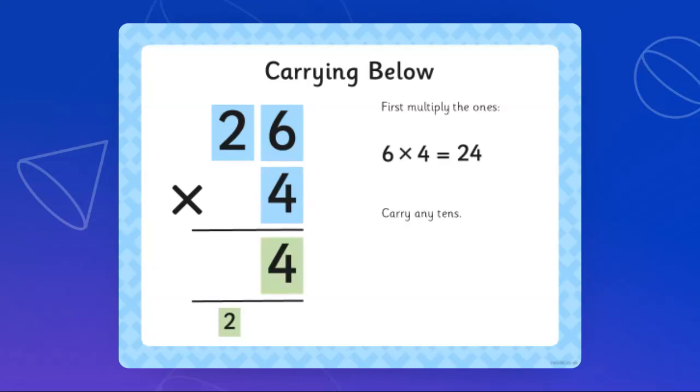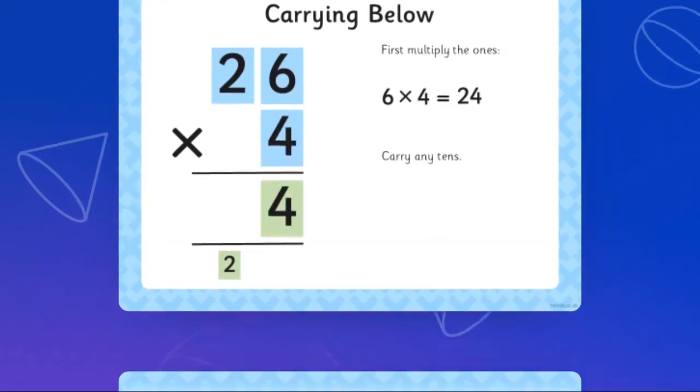Step number 1, you are going to multiply 4 times 6. 4 times 6 is 24. Now it's either you put the number below, as you can see the method carrying below, or you can keep it above.